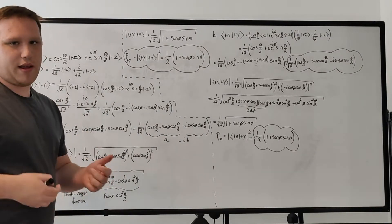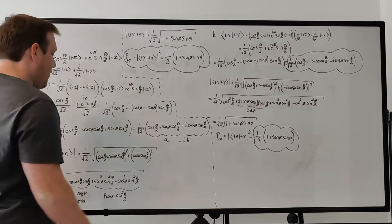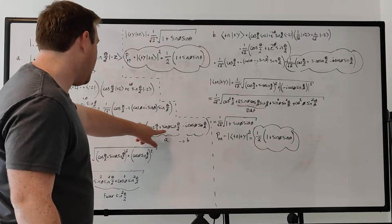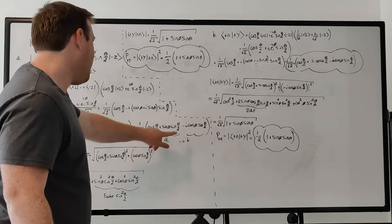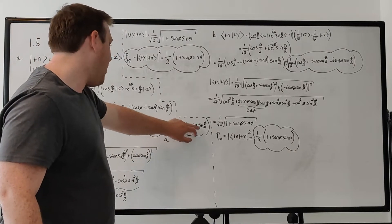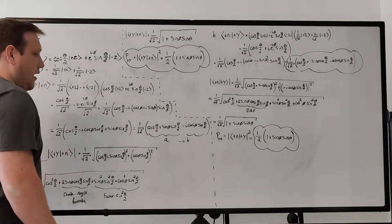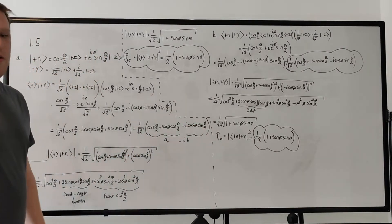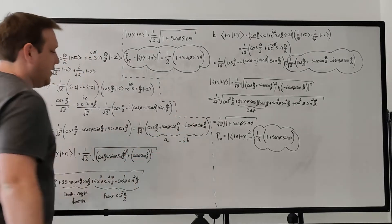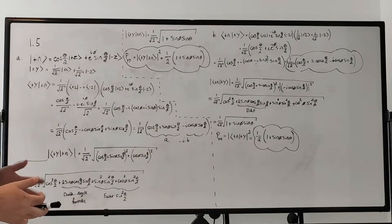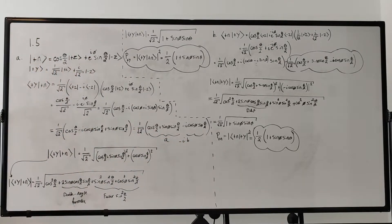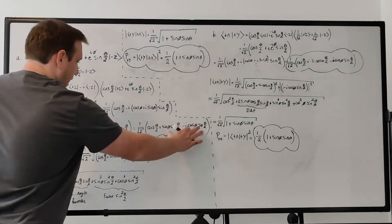Rearranging terms to write it as a complex number, we factor out 1/√2. The real part is cosine(θ/2) + sine(φ)·sine(θ/2), and the imaginary part is −i·cosine(φ)·sine(θ/2). Writing it as a − ib makes it clear this is a complex number with a real part and an imaginary part. That is our probability amplitude.